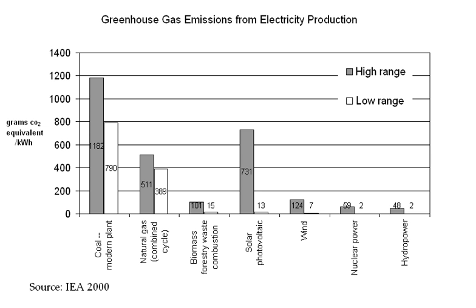The Intergovernmental Panel on Climate Change has said there are few fundamental technological limits to integrating a portfolio of renewable energy technologies to meet most of total global energy demand. At the national level, at least 30 nations already have renewable energy contributing more than 20% of energy supply. As of 2012, renewable energy accounts for almost half of new electricity capacity installed and costs are continuing to fall. As of 2011, 118 countries have targets for their own renewable energy futures and have enacted wide-ranging public policies to promote renewables.